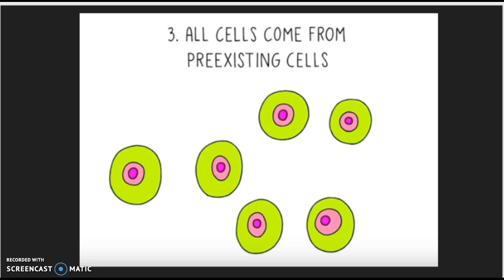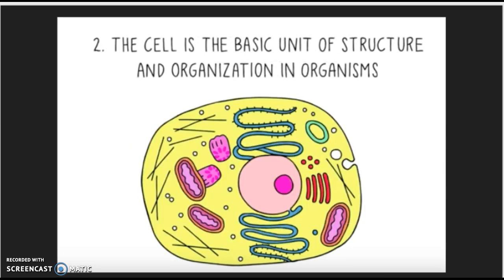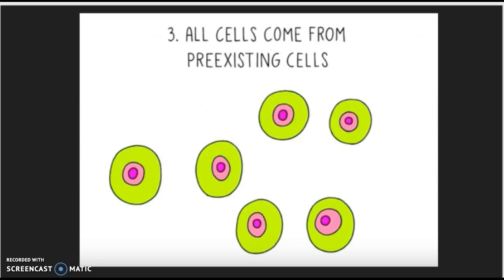Now that we've wrapped up what the cell theory is: all organisms are composed of one or more cells, the cell is the basic unit of life, and all cells come from pre-existing cells.